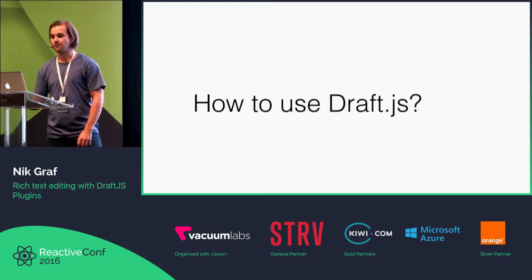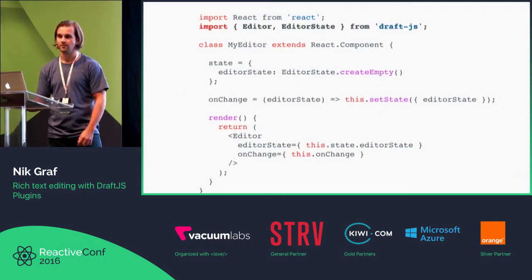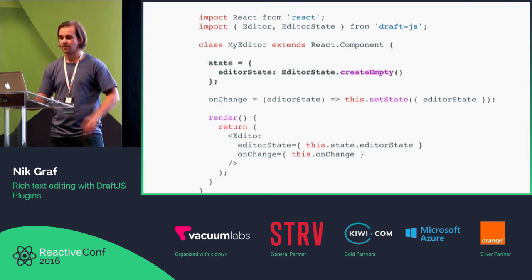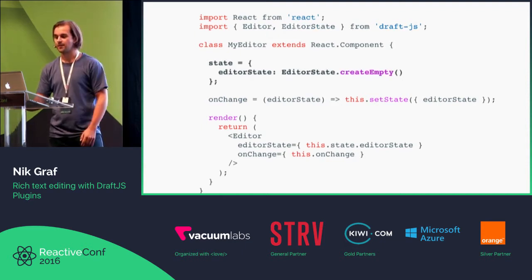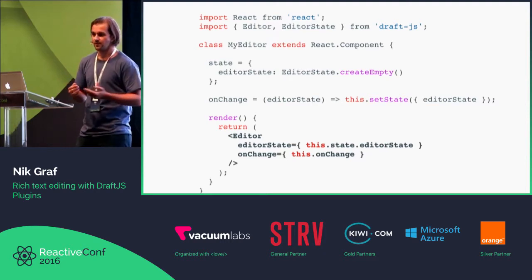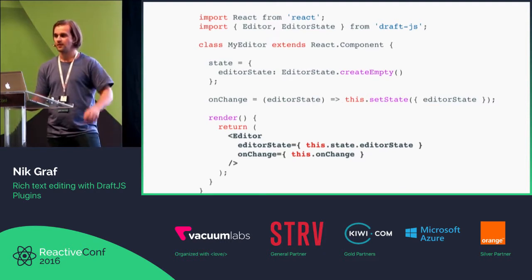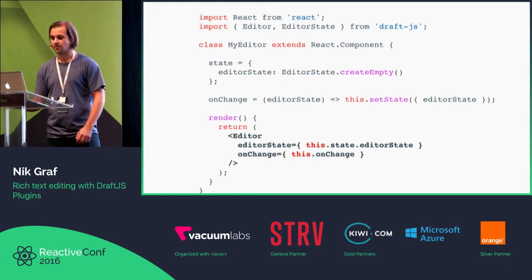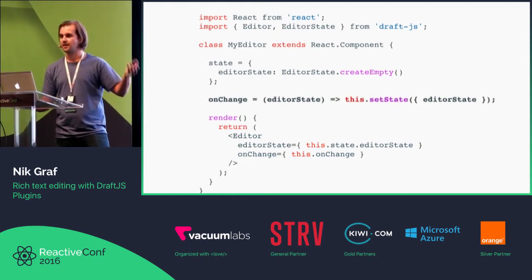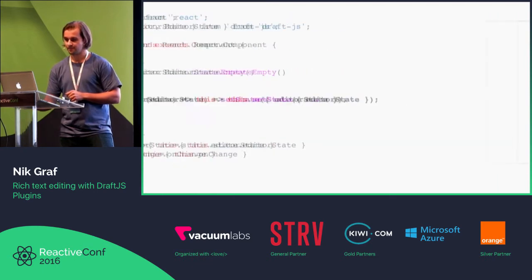So how do you use DraftJS? Simply, you import your editor and editor state to initialize the editor state, which is basically a value, and then you use it like a controlled component. You get the editor state, which is simply like the value in a controlled component, and you have onChange, then you can update editor state again.